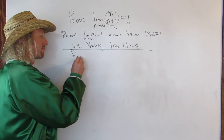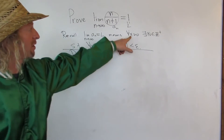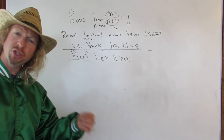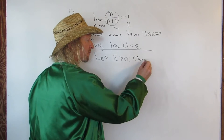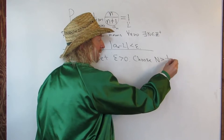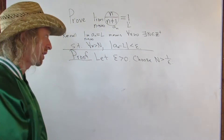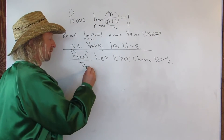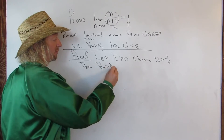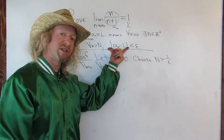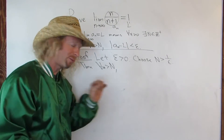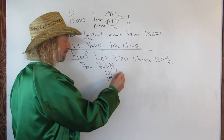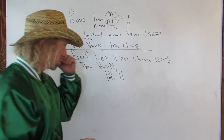Let's write the formal proof. We said N was bigger than 1 over epsilon — we'll need that. So: let epsilon be greater than zero. That's the first condition in the definition. Choose a positive integer N greater than 1 over epsilon — we can do that via the Archimedean principle. Then for all little n greater than capital N, we're going to look at the difference a sub n minus l.